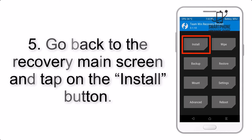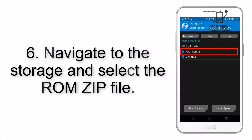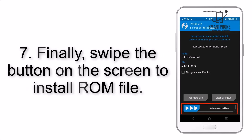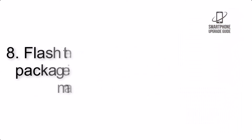Step 5: go back to the recovery main screen and tap on the Install button. Step 6: navigate to the storage and select the ROM zip file. Step 7: swipe the button on the screen to install the ROM file.